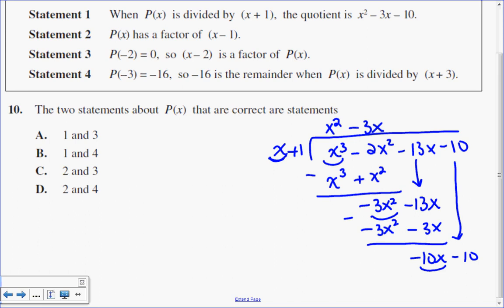So negative 10x divided by x is negative 10, and I multiply. Negative 10 times x is negative 10x. Negative 10 times 1 is negative 10, and I have a remainder of 0.